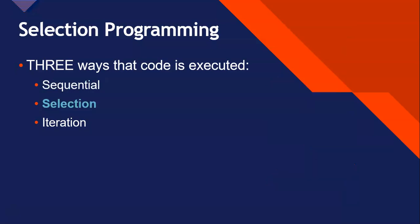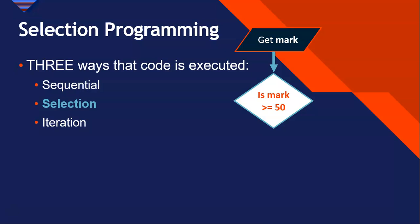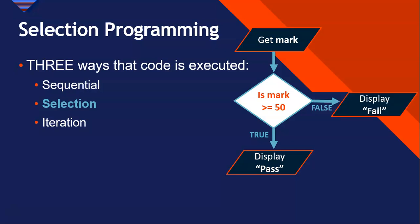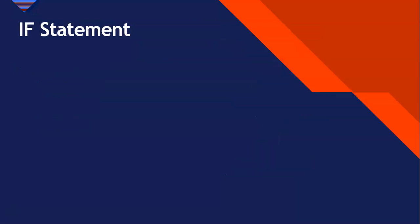Selection programming is slightly different. In selection programming, certain parts of code are not executed, or certain code is executed based on certain conditions. For example, if we get a mark from the user's input, an if statement might say: if the mark is greater than 50, display the word pass; but if it's not true, display the word fail. We only want pass displayed under certain conditions, and if those conditions are not met, then we display fail. That's basically what selection programming is, and we use an if statement to implement it.